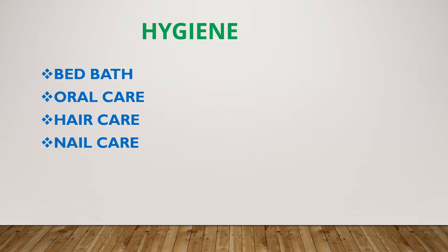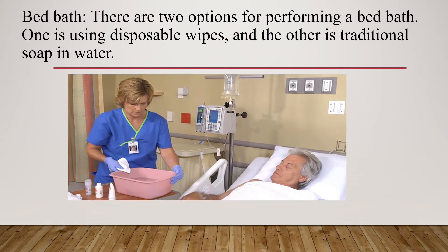Next, hygiene. Hygiene includes bed bath, oral care, hair care, and nail care. For bed bath, there are two options: one is using disposable wipes, and the other is traditional soap and water.